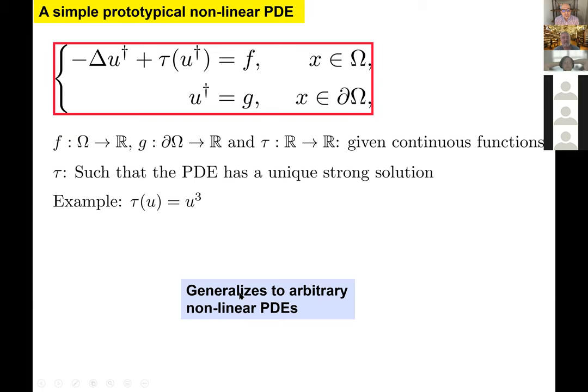This GP method can be applied to arbitrary nonlinear PDEs, but for ease of presentation I will describe it first for a nonlinear elliptic PDE in which f, g, and tau are continuous functions such that the PDE has a unique strong solution. The nonlinearity is tau, which we assume to be continuous — as an example you can take tau(u) = u cubed. This method generalizes to arbitrary nonlinear PDEs.